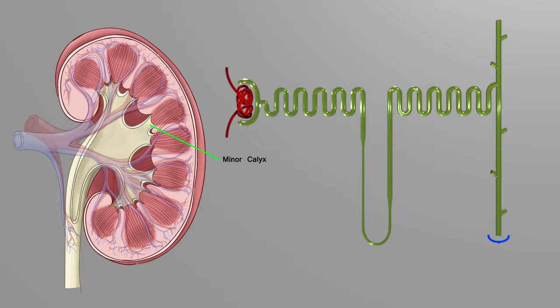So that's kind of what happens with the minor calyx. Once the fluid goes into the minor calyx, it's now called urine and you can no longer reabsorb any material from it.